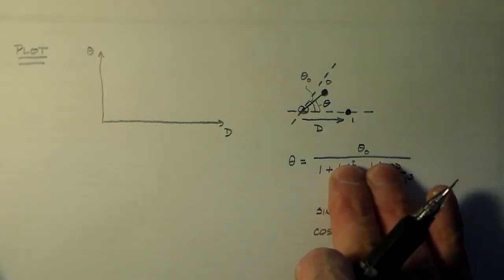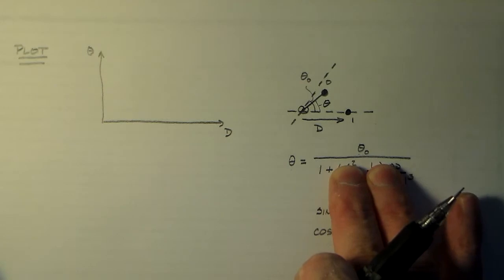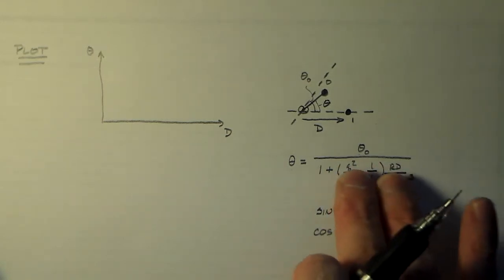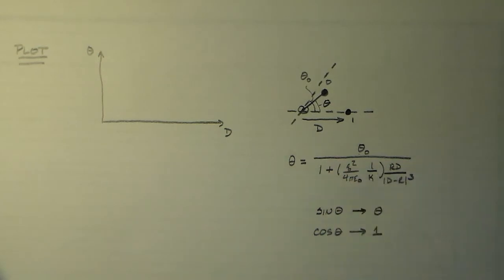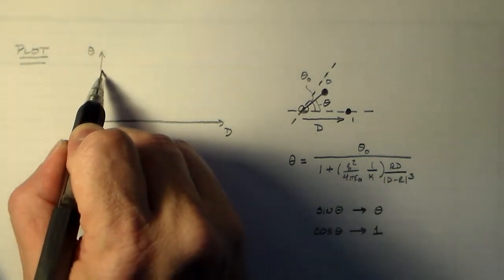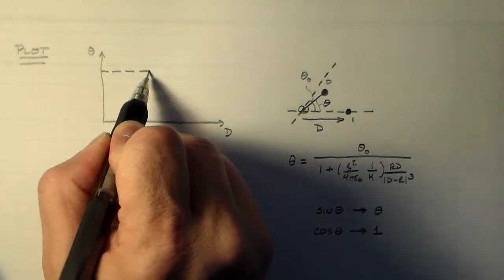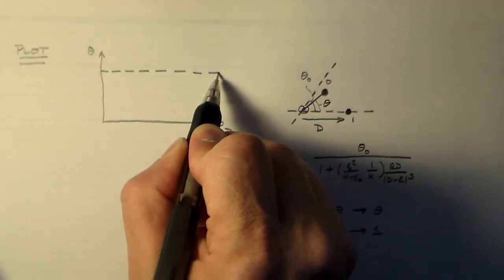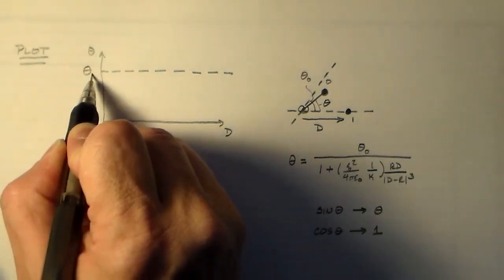So because of that, we know that the maximum possible theta is just theta naught. If all this goes to zero, we get theta naught. So we can just say whatever we get, it's going to have a maximum theta naught.